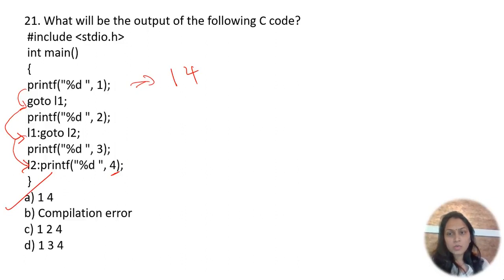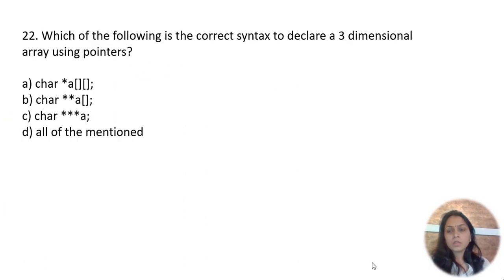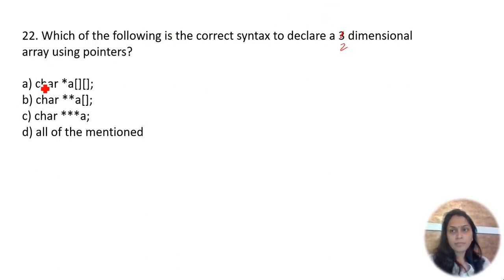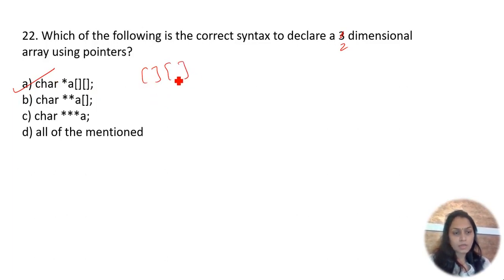Which of the following is the correct syntax to declare a two-dimensional array using pointers? The two bracket indices indicate rows and columns. So a declaration with two indices represents a two-dimensional array.